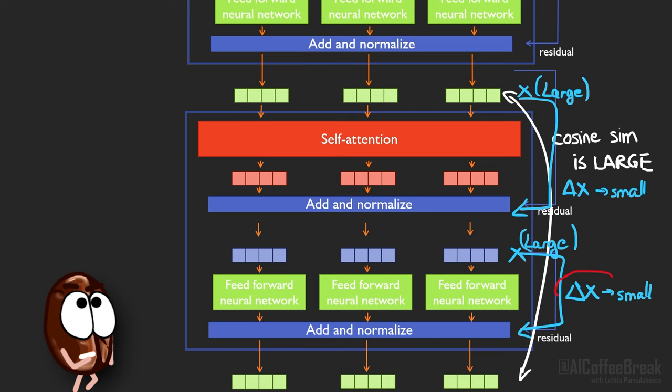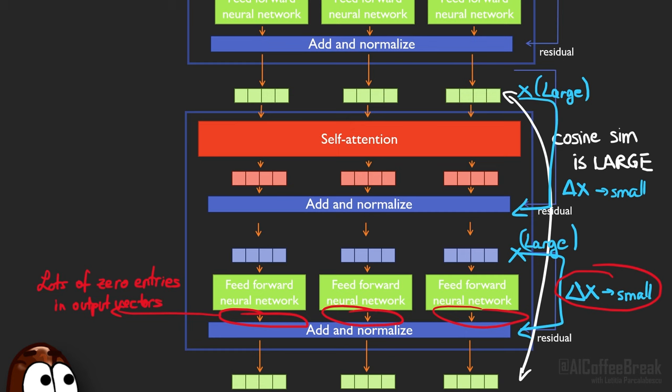But why is the norm of the layer small while the norm of the residual is high? Well, because most of the vector values of the activations in MLP are 0 because of ReLU and GELU activations.